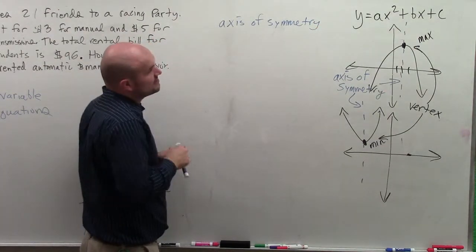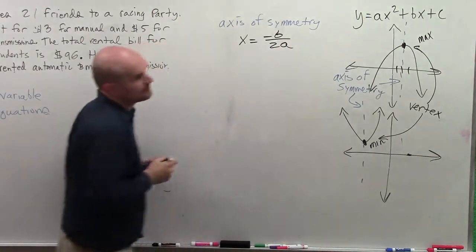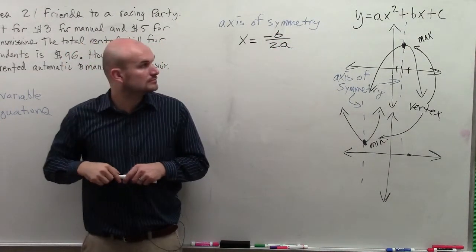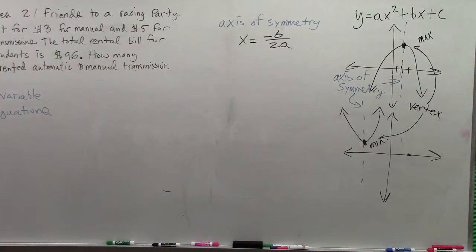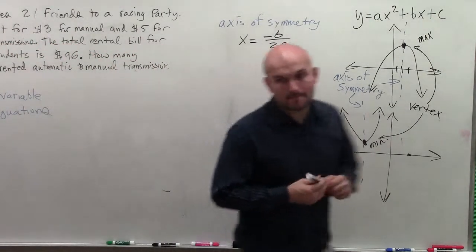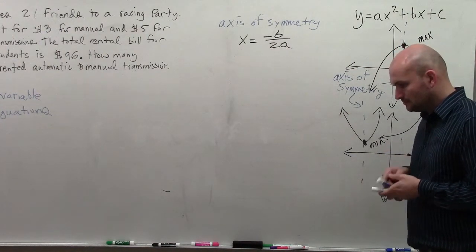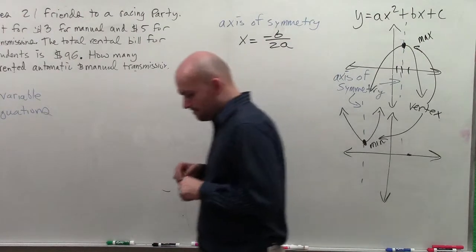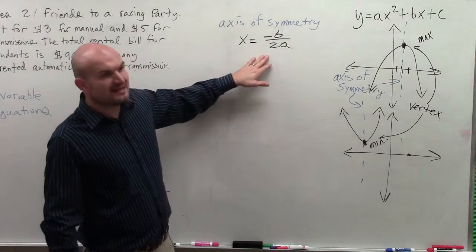So the first thing we're going to do is graph the axis of symmetry, or at least identify the axis. When we're graphing, we're going to graph and identify the axis of symmetry. So the axis of symmetry is x equals negative of b divided by 2a, where your a, b, and c come from over here. So we identified the axis of symmetry.